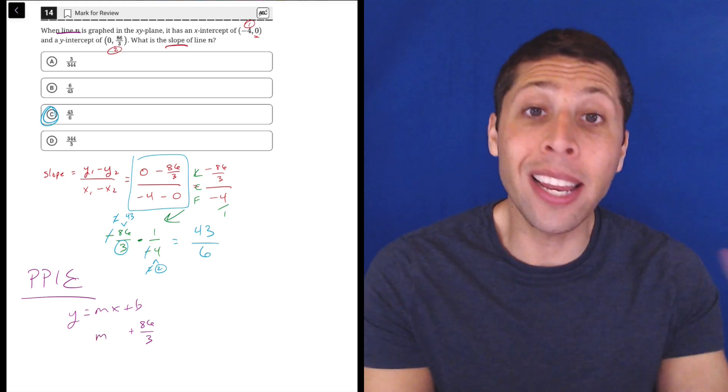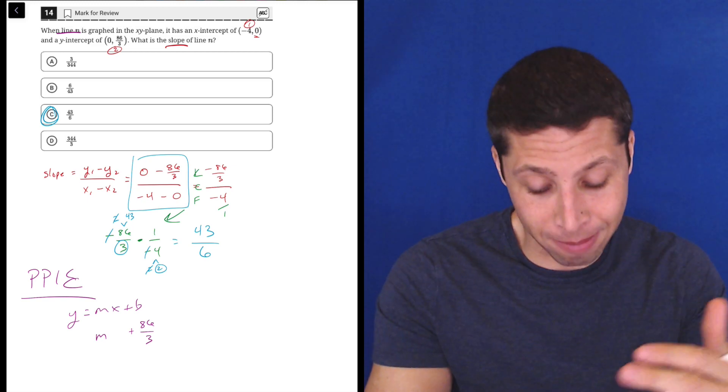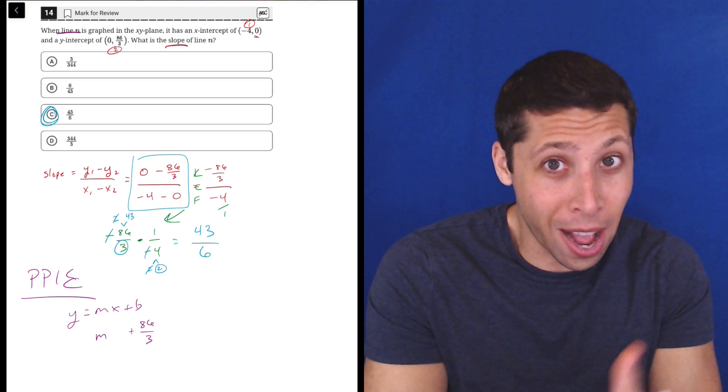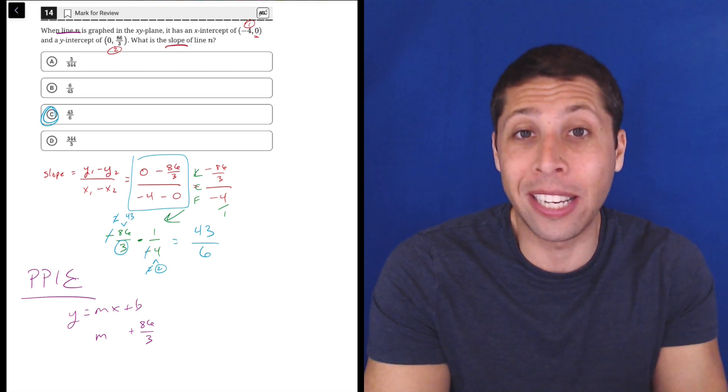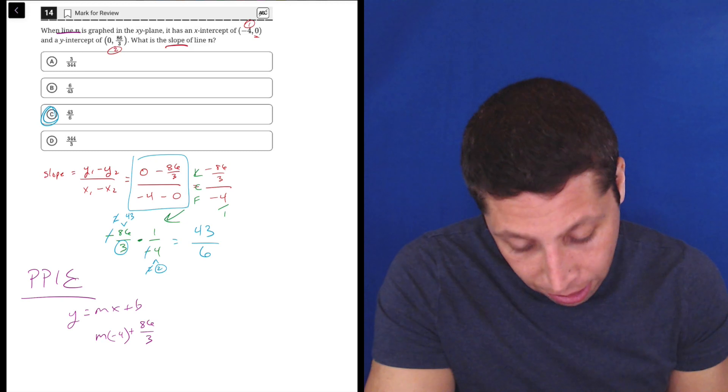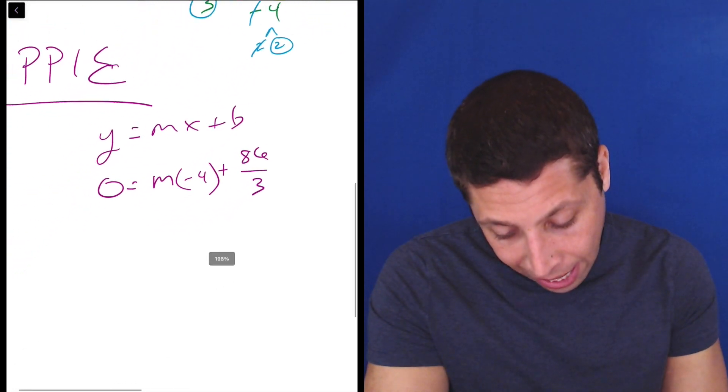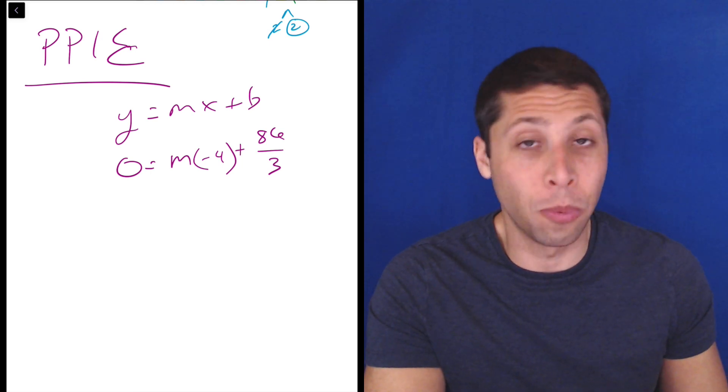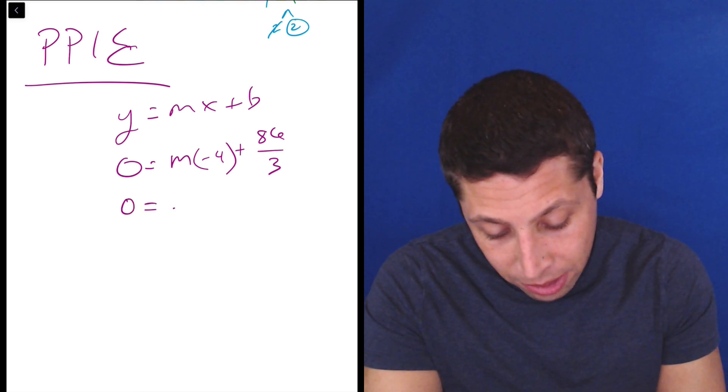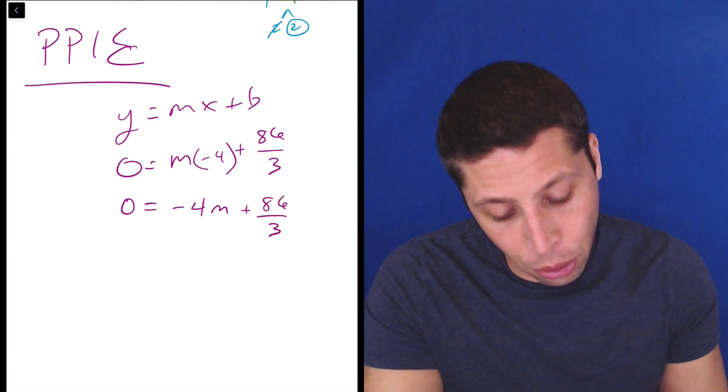And then the x-intercept doesn't kind of neatly fit into the equation. The m is the slope, which is what we're solving for. So we should probably leave that as an m. And then, but whether it's an x-intercept or any other point, we can just kind of put that in and put it in for x and y and just let it sit wherever we need it to sit. So the x is negative 4, and the y is 0.